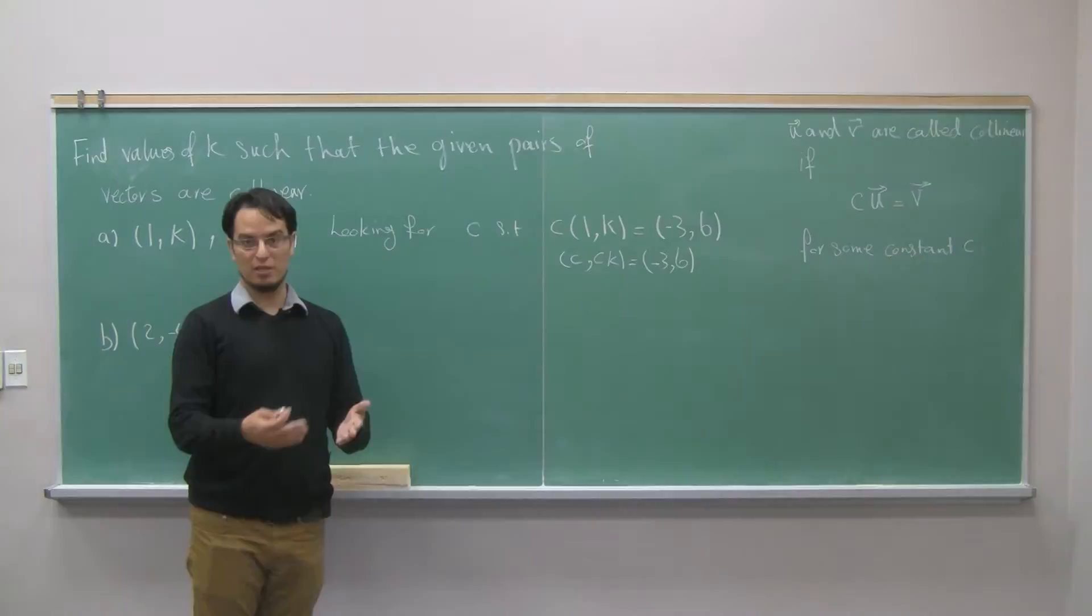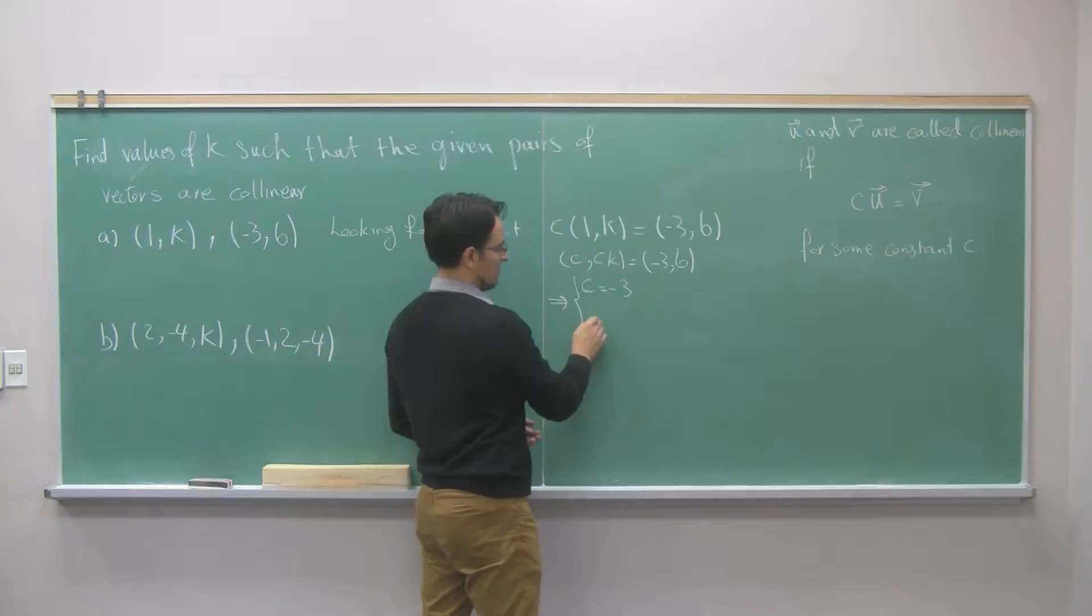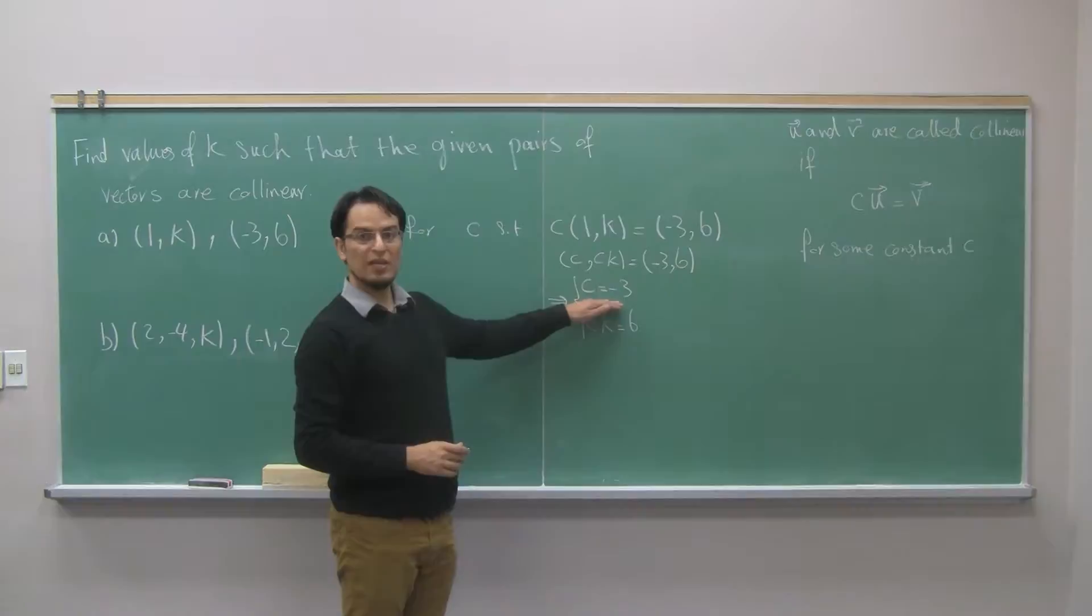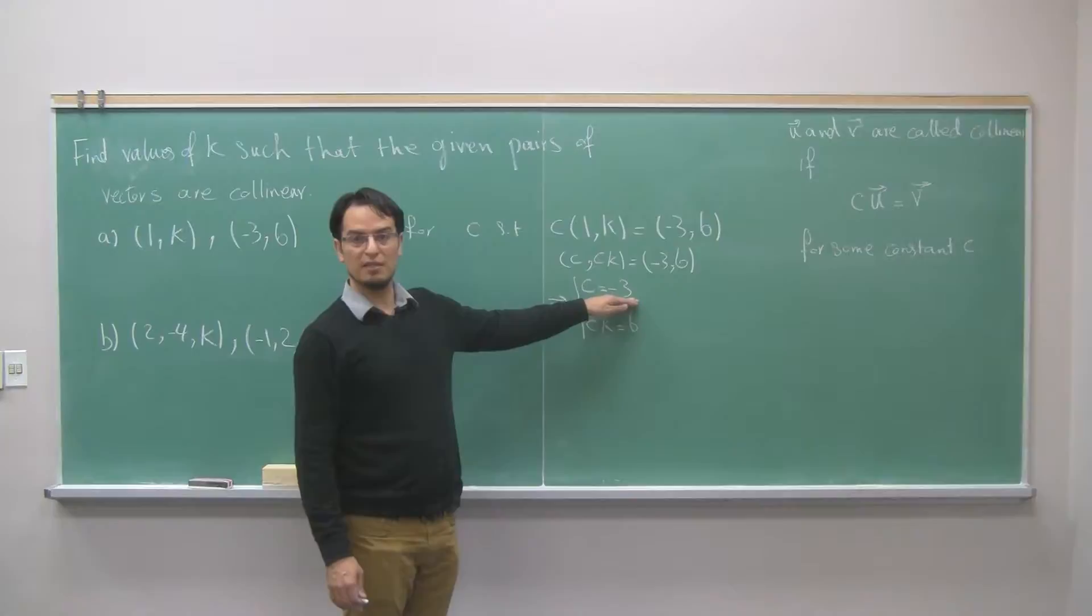Therefore, I will get two equations. One for the first component, c should be negative 3. And one for the second component, ck should be 6. This is a very good situation because there is an equation only for c. And when you look at that, it gives you the value of c. c is negative 3.